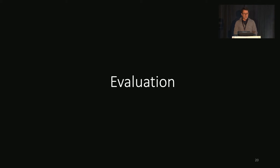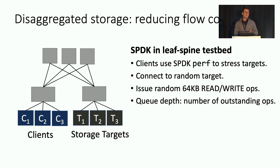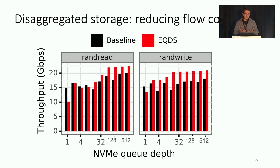For performance evaluation, we have two racks — one with storage clients, one with storage targets. Clients issue reads and writes to random servers. Normal RDMA suffers from collisions and gets lower throughput, whereas with EQDS per-packet load balancing should help. Running the same unmodified RDMA stack over EQDS, as long as you have enough storage requests in your queue, you get between 10 to 30% better throughput with EQDS.